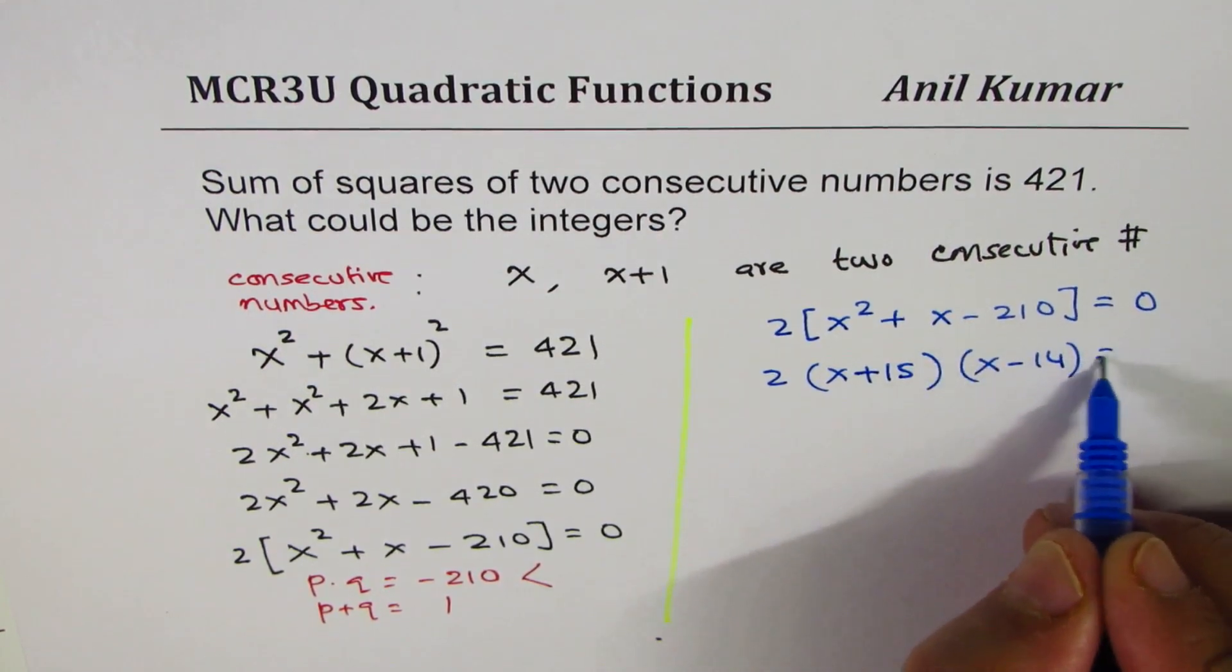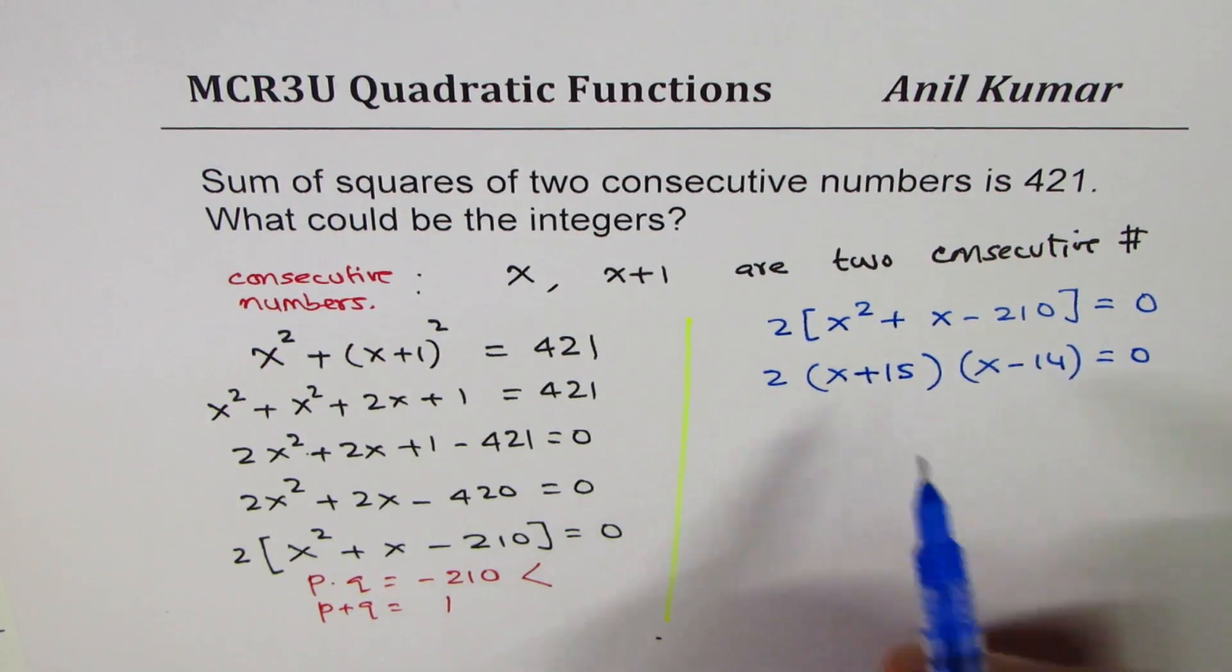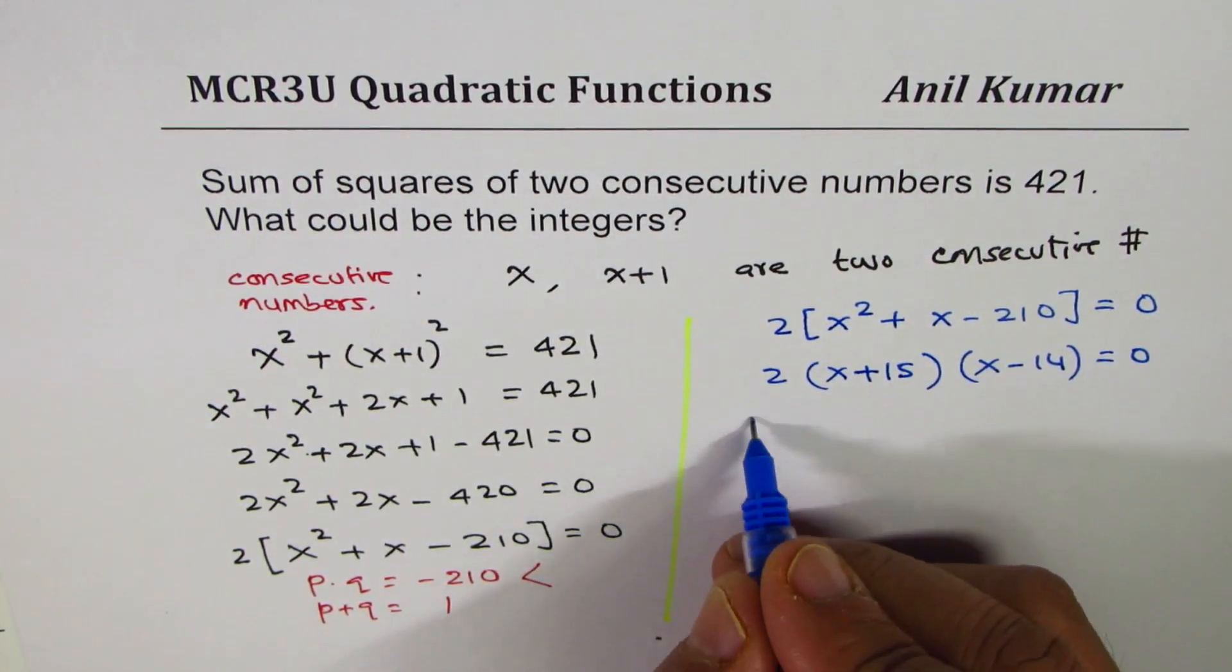Only then when you multiply you get negative number. So I hope you understand and appreciate this technique of getting to two numbers, especially working with bigger difficult numbers, right? Now these two factors equated to 0 gives you two possible solutions.